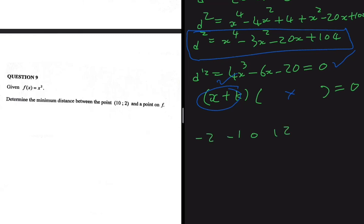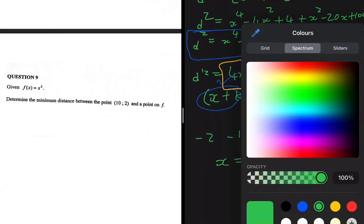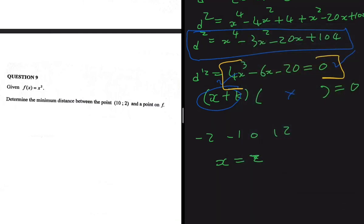Trying x = 0 gives -20. Trying x = 1 gives -22. Trying x = -1 gives -18. Trying x = -2 gives -40. Trying x = 2 gives zero! So when x = 2, the equation 4x³ - 6x - 20 = 0 holds, meaning x = 2 is where we have our minimum distance.